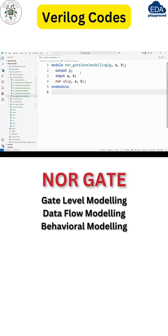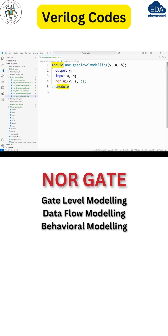In this video, let us see the Verilog code for NOR in all styles of modeling: gate-level modeling, data flow, and behavioral. This is NOR gate-level modeling. It starts with the module keyword, module name, and port list. It contains two inputs, a and b, and one output, y.